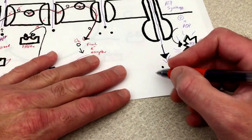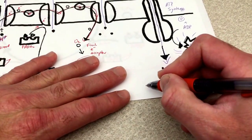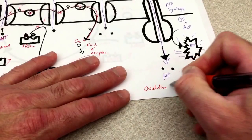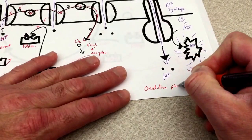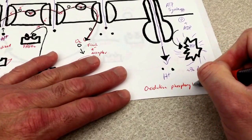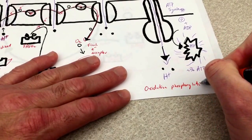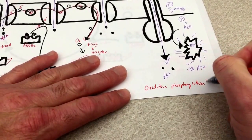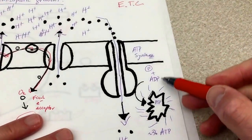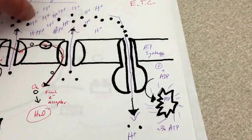This process is called oxidative phosphorylation — sticking the phosphate onto ADP.